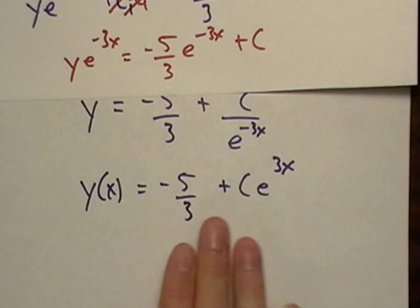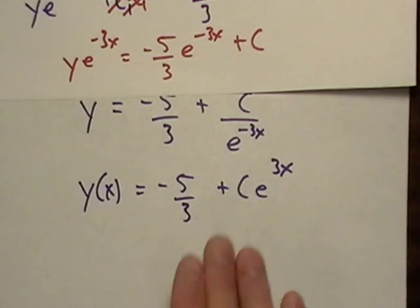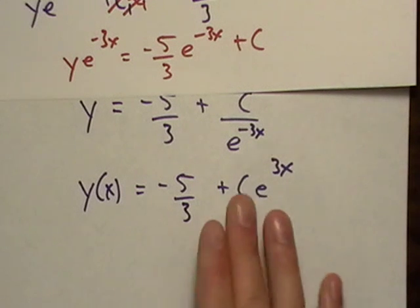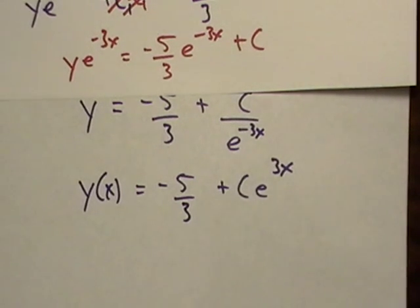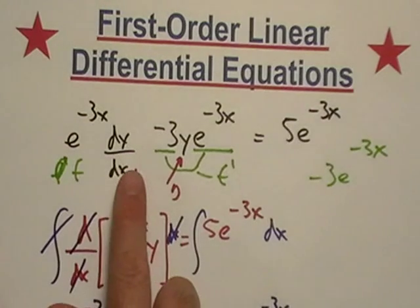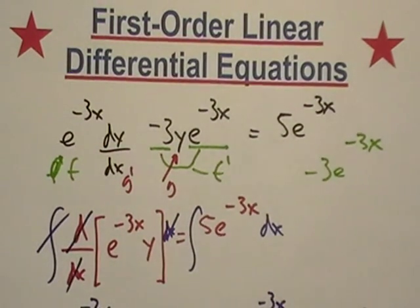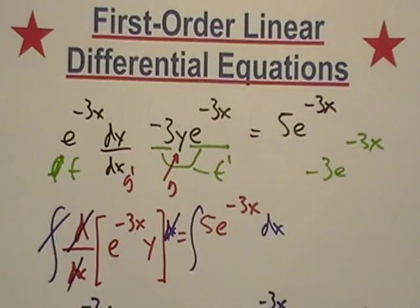Now this is what's called a general solution because I still have the c in here. There are a couple different ways we could eliminate c and actually produce a real number. Probably the easiest way would be if we had an initial value problem, but we're not going to worry about that right now. Like I said, the toughest part about these things is this part right here when we went through there. I hope I didn't confuse you in this video; if I did, I'll have some more examples coming up pretty quick.